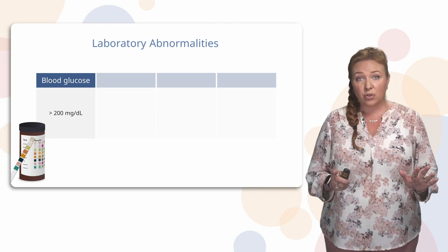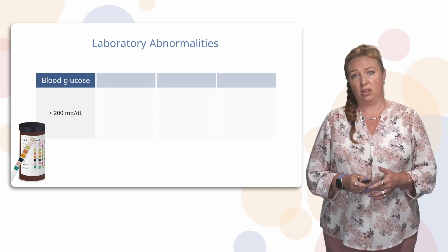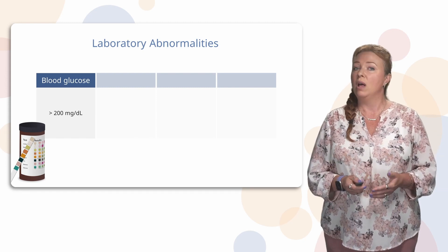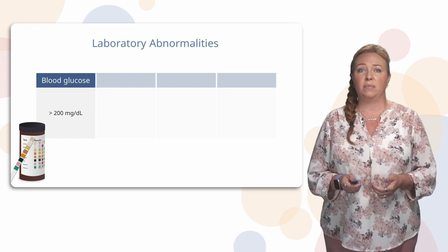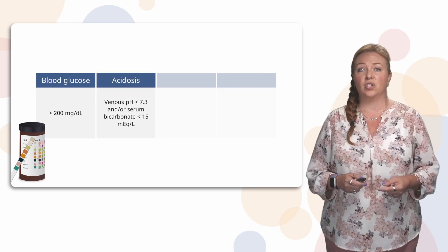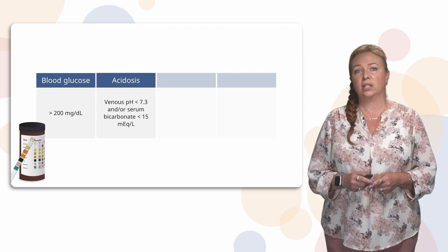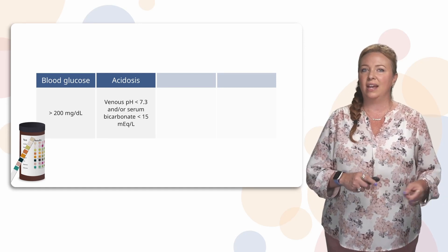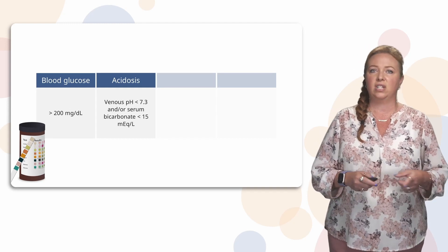There's some more laboratory abnormalities that you're going to be looking for in DKA. The clear one is the blood glucose. So blood glucose is generally going to be greater than 200. You're looking for that acidosis. We talked a little bit about that earlier when we were talking about severity. So that venous pH is going to be less than 7.3 and that bicarb less than 15.